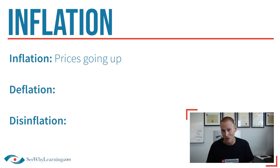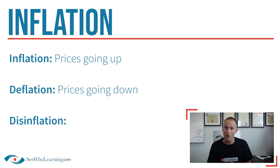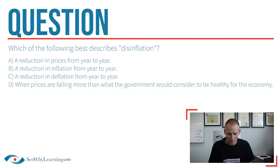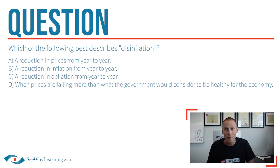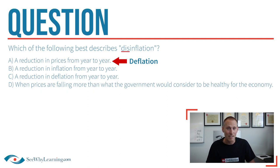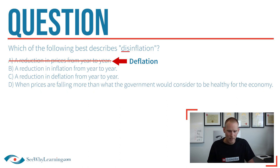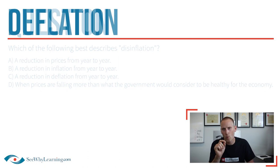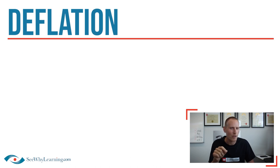But watch this — what do we call that? Obviously deflation. It's just the opposite of inflation, right? It's when prices are actually falling. So with this in mind, let's take a peek at the answers. We see that answer A — 'a reduction in prices from year to year' — is essentially the definition of deflation, not disinflation like this question is asking about. So let's go ahead and eliminate answer A.